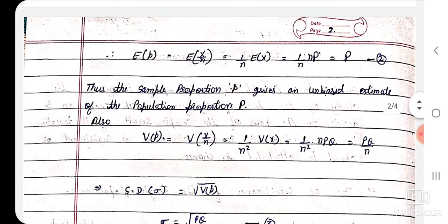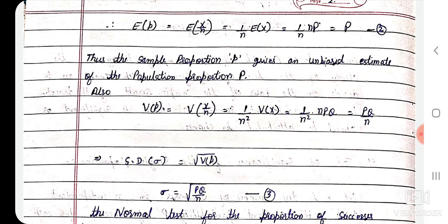Also, Var(p̂) = Var(x/n) = (1/n²)·Var(x). Because variance represents the second moment about the mean, which is the summation of probability times (x minus x-bar) squared. This gives Var(p̂) = pq/n.